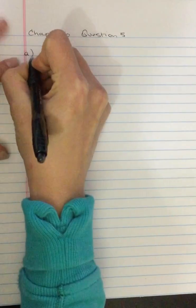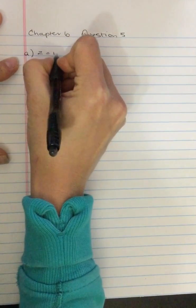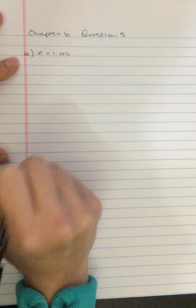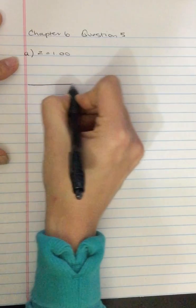So, Question A, the Z-score is equal to 1.00. So, if I draw that out,